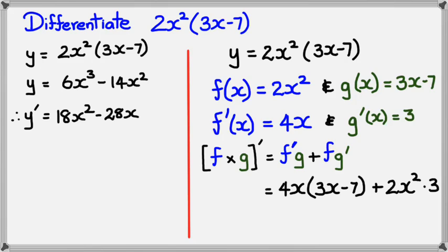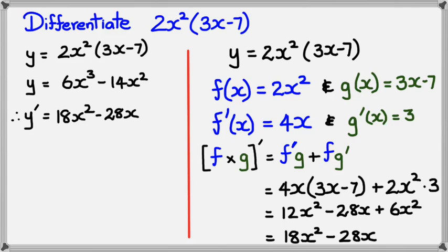Now, expanding the brackets out, we're going to end up with 12x² minus 28x plus 6x². Simplifying this, we're going to get 18x² minus 28x. And as you can see, both of these answers are the same.